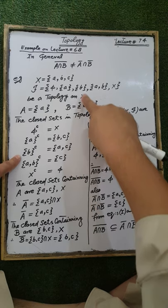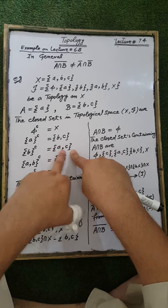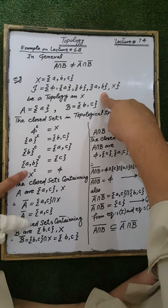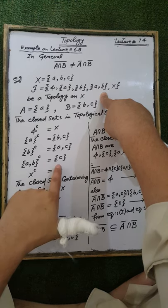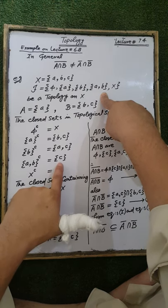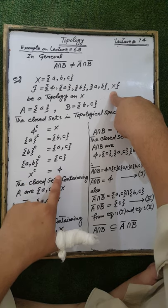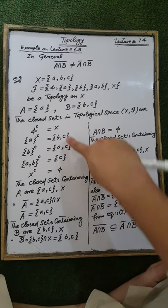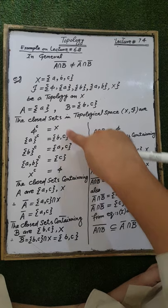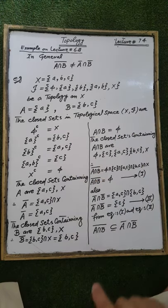The closed set — the complement of the open set containing element B is the closed set containing elements A, C. The complement of the open set {A, B} is the set containing element C, and the complement of the open set X is the empty set phi. That is, these are the closed sets with respect to the topology T on the ground set X.